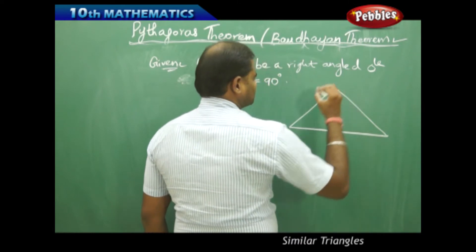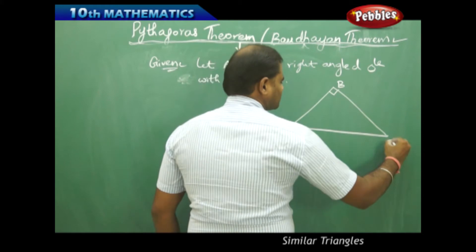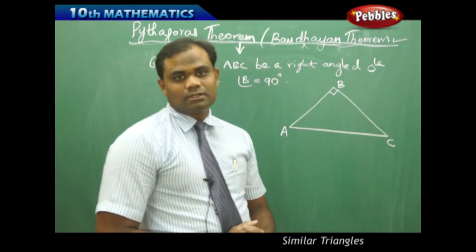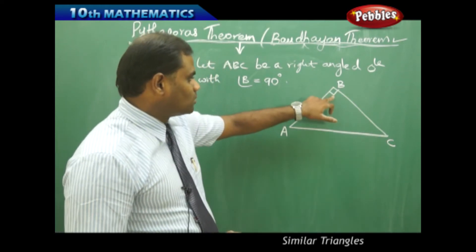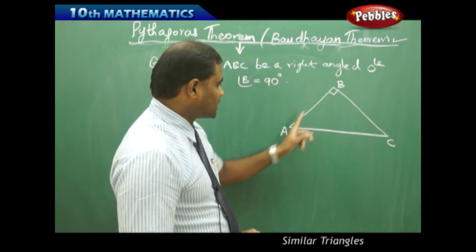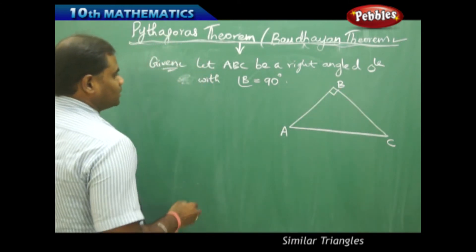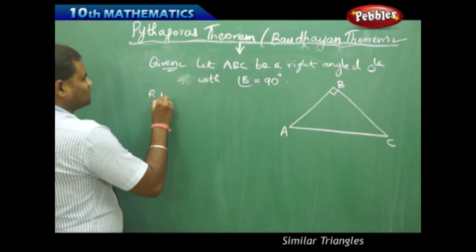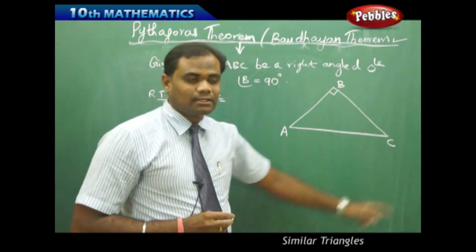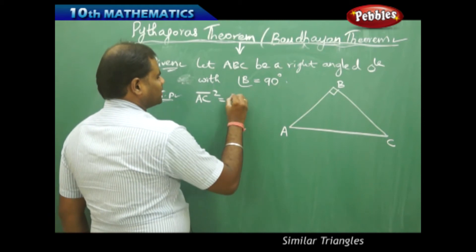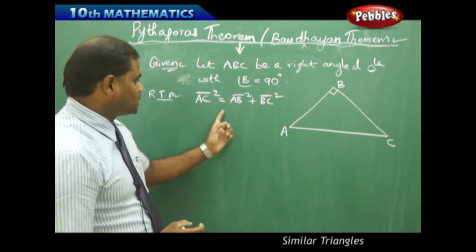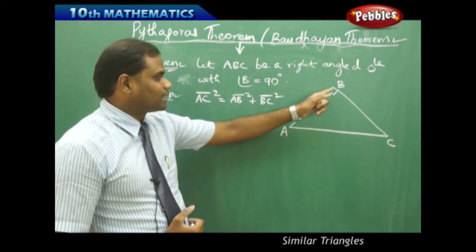This would be 90 degrees, and this is triangle ABC right angled at B. For this right angled triangle ABC, I need to prove that the hypotenuse — since the right angle is at B, the hypotenuse is opposite to 90 degrees — that is, AC is the hypotenuse and the other two sides are AB and BC. Therefore what I need to prove is that AC squared equals AB squared plus BC squared. This is the Pythagoras theorem or the Baudayan theorem which I need to prove for triangle ABC right angled at B.